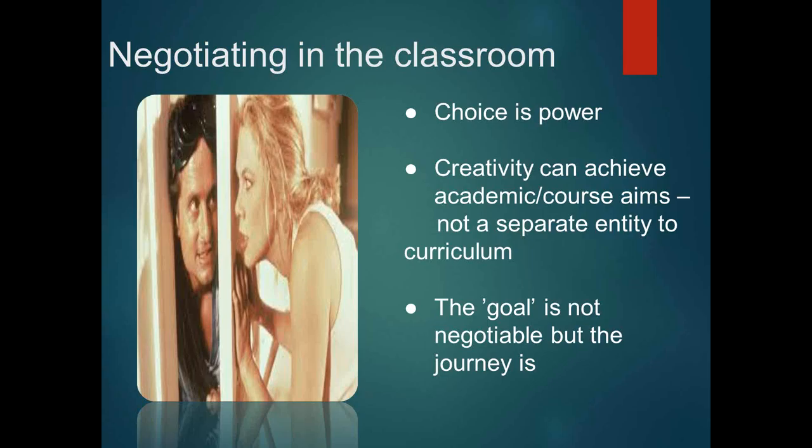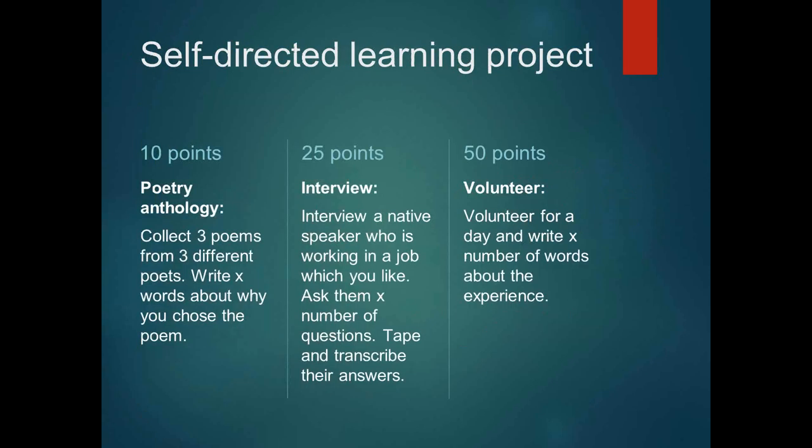Many students are doing accounting or business, but what they'd really love is to be a film director — can we incorporate some of those interests? Here's a project I did with students: a point system fostering a sense of competition. These are three examples of activities students could do for different point sets. Many went out to volunteer for 50 points, for instance. Another group went to Ballarat for the weekend and did a photography essay. At least they had a sense of choice about what they were receiving their assessment for.